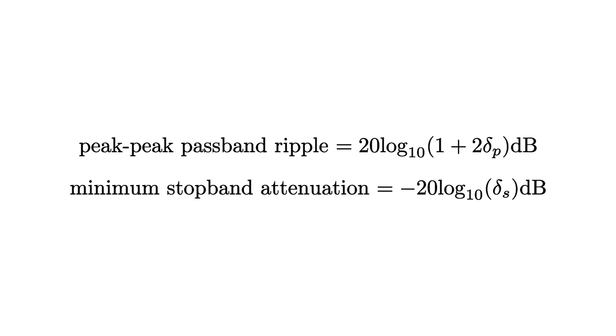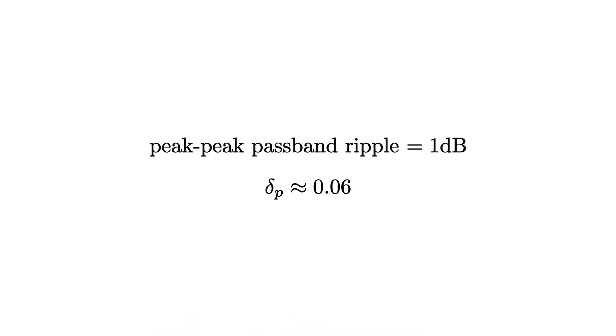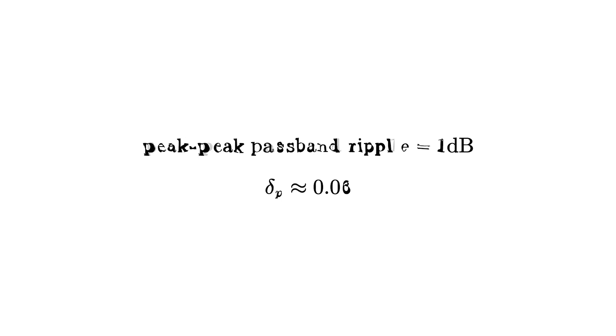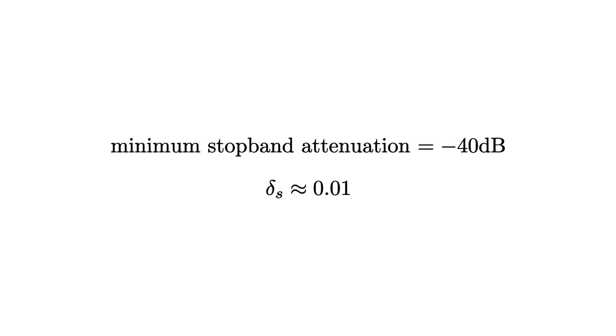Those specifications for delta P and delta S were in actual gain values, not decibels. If you want to know what these specs look like in decibels, here are the conversion formulas. As an example: if the maximum peak-to-peak pass band ripple allowed is 1 dB, delta P is about 0.06; and if the minimum stop band attenuation is 40 dB, delta sub S would be something like 0.01.